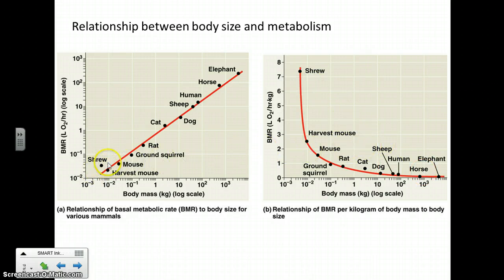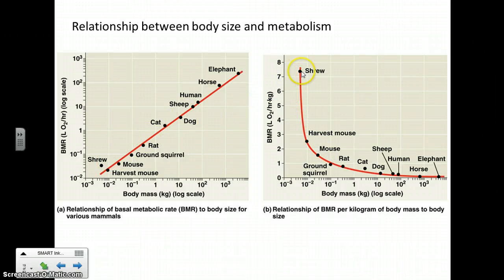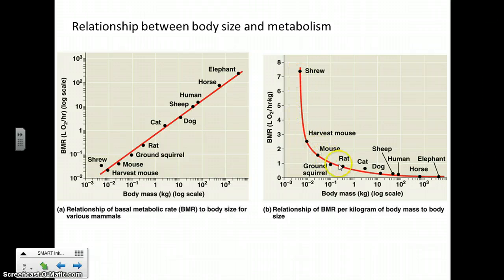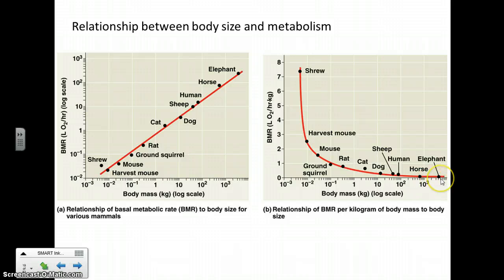It's interesting that one relationship is relatively linear, but there is quite an exponential decay on a per-unit-mass basis. Really small mammals like a mouse or shrew have a very high metabolism, but it quickly drops off as we get to larger and larger organisms.